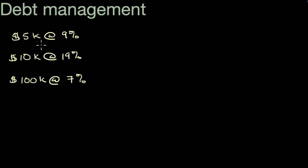Let's say you have three loans: $5,000 at 9% interest rate, $10,000 at 19% interest rate, and $100,000 at 7% interest rate.